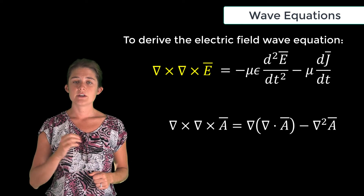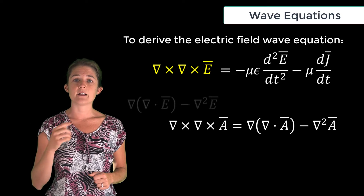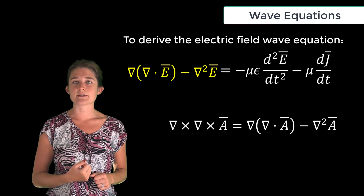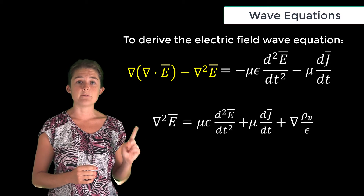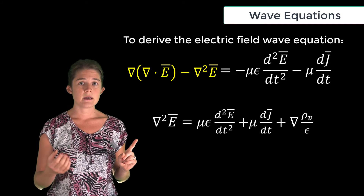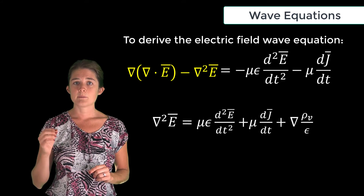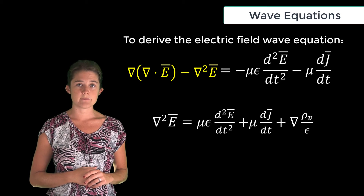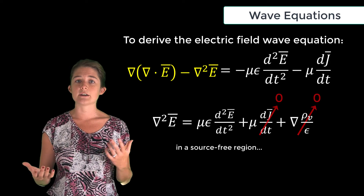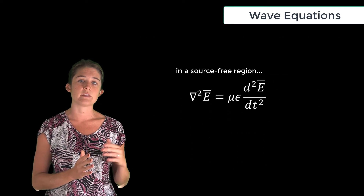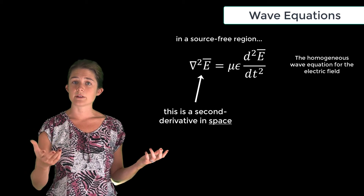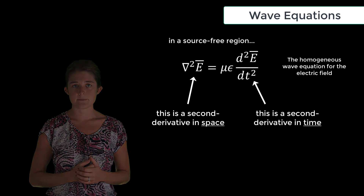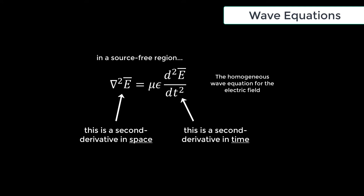We can also simplify the left-hand side of the equation using a vector identity, so del cross del cross E becomes del of (del dot E) minus del squared E. By Gauss's law, del dot E is equal to rho_v over epsilon. So the final equation we obtain is the vector Laplacian of E: del squared E equals mu epsilon times the double time derivative of E, plus mu dJ/dt, plus the gradient of rho_v over epsilon. In a source-free region, both the charge and the current go away, and we're left with the homogeneous wave equation for the electric field. Note that the vector Laplacian on the left is a second derivative in space, related by the wave equation to a second derivative in time on the right.